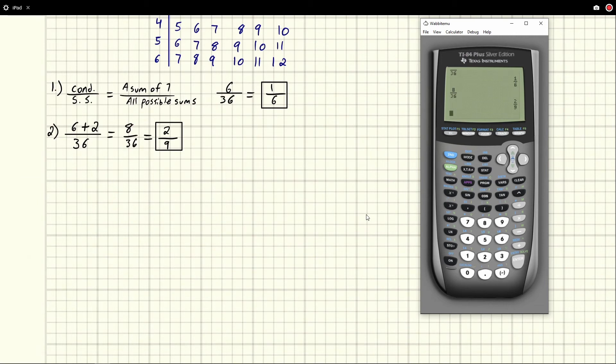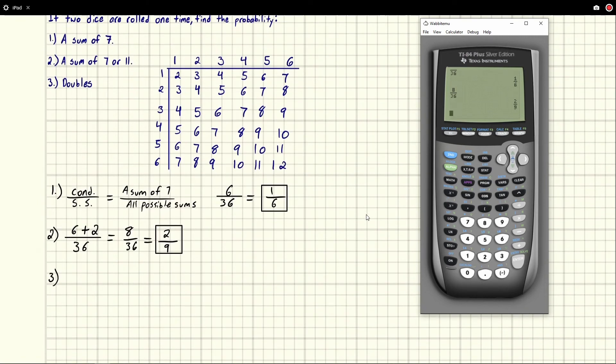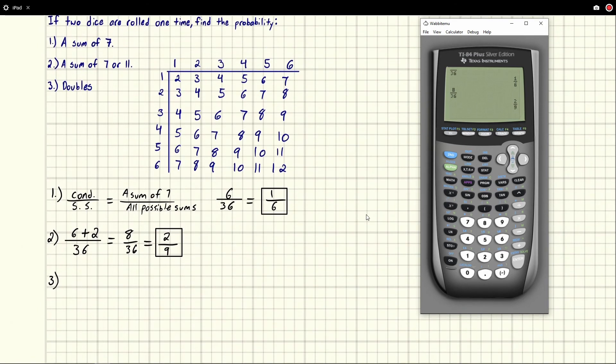All right, so now for number three. Not a sum of, they just want doubles. So any place that's a double. So on here doubles aren't the easiest to see, but think about it. A double is just when the numbers match, right? So a one and a one, that's going to be this number. A two and a two, it's going to be this number, right? Because two and two, that's how we do it. So a three and a three cross right here, so it would be this one. Four and four, and you can see we're just going down this diagonal. A six and a six. So that's all our doubles.